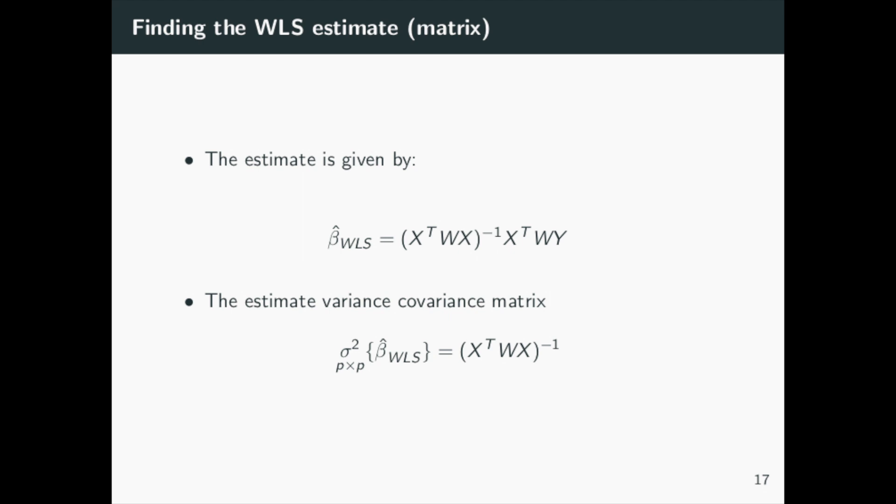If you were to take the expectation of beta hat WLS, you would attain beta. The estimator is unbiased. The variance-covariance matrix is given by the second equation.